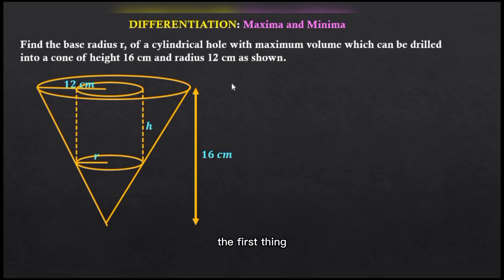So first, the volume for a cylinder, that is a cylindrical hole, is given as πr²h. Now because we are required to find the base radius that would give us the maximum volume of the hole, we are required to express the volume v in terms of the radius alone.